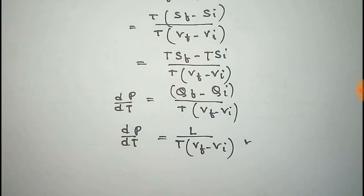And this is the Clausius-Clapeyron equation, that is dP/dT is equal to L by T(Vf - Vi), where V is the volume, T is the temperature, L is the latent heat.